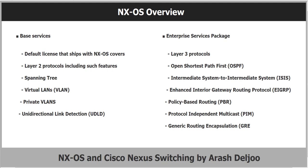The next feature is base services. The default license that ships with NXOS covers Layer 2 protocols, including features such as Spanning Tree, Virtual LANs or VLANs, private VLANs, and Unidirectional Link Detection, or UDLD.